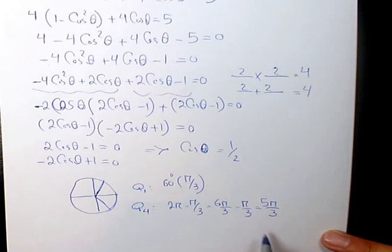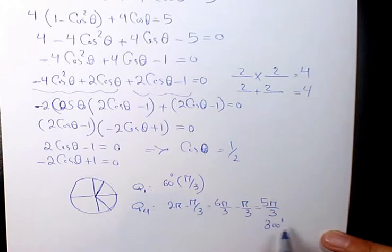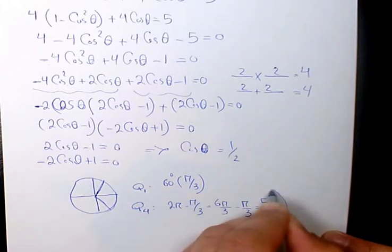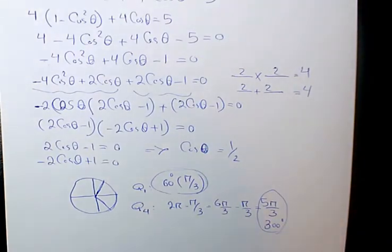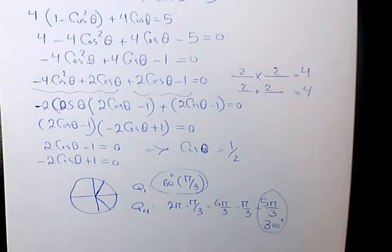Or in degrees, 360 minus 60 equals 300 degrees. So the two answers are 60 degrees and 300 degrees, or in radians, pi over 3 and 5 pi over 3. That is the final answer.